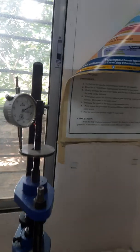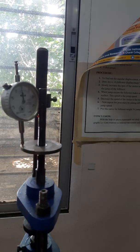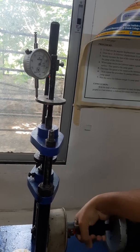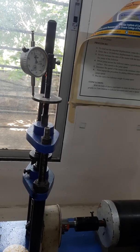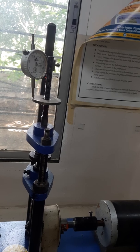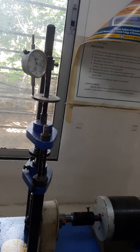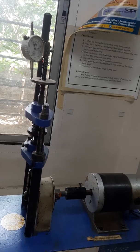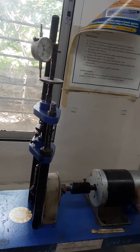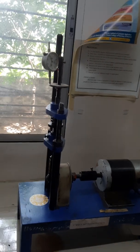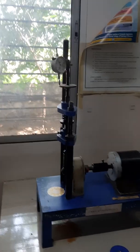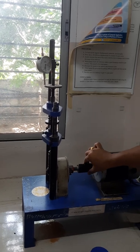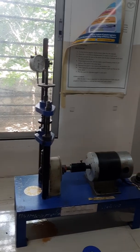Now what I want is I will be rotating the cam through one full revolution starting from 0 to 360 degrees and in intervals of 20 degrees. Then we will note down the deflection whatever we are getting at the dial gauge. So by drawing deflection as the y-axis and rotation of the cam as the x-axis, we will be getting a curve that will be called as the displacement diagram for this cam.